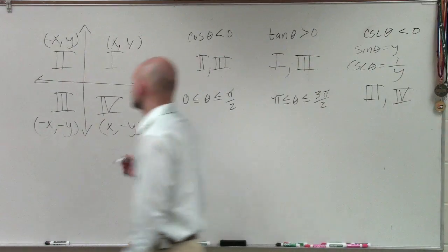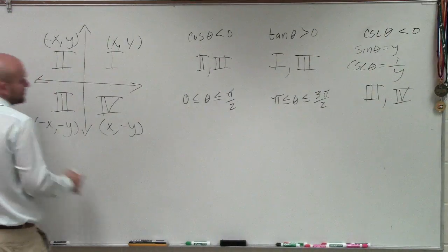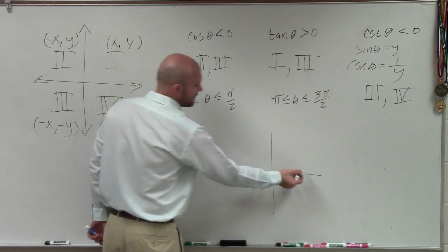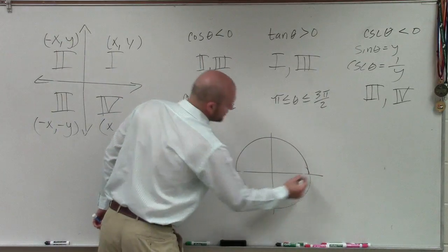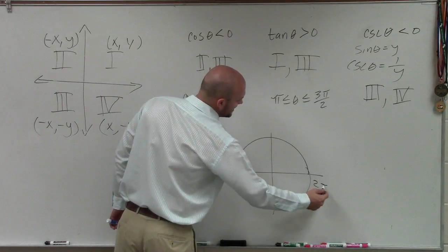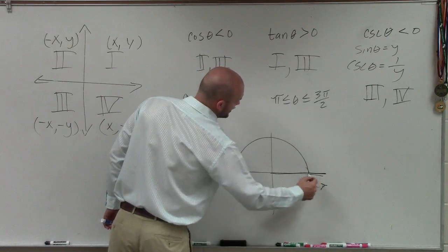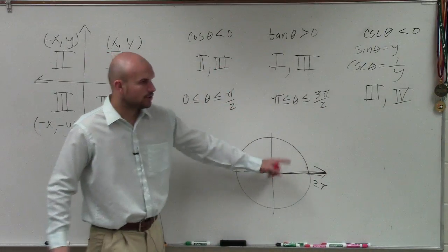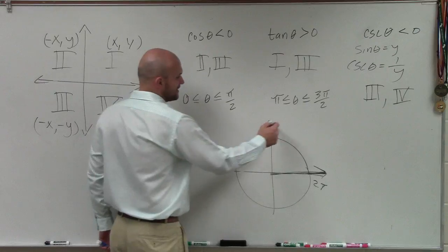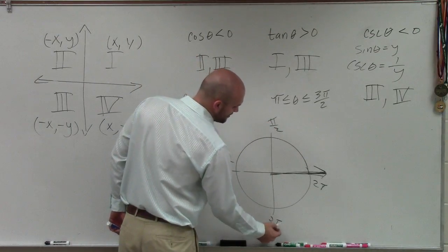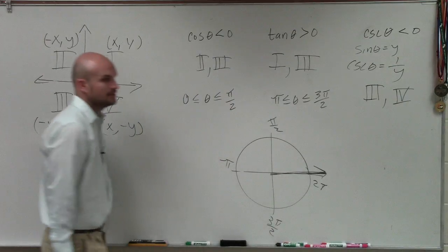Lastly, if we go back to the unit circle. If I create a circle, ladies and gentlemen, we talked about halfway around the circle is pi, and all the way around is 2pi. Remember, we always start at our initial side right here. If I rotate a quarter way around, that's pi over 2. If I rotate 3 quarters around, that's 3pi over 2.